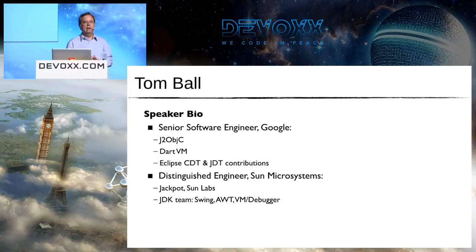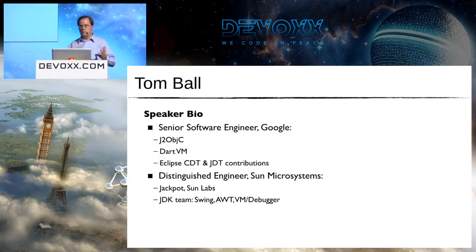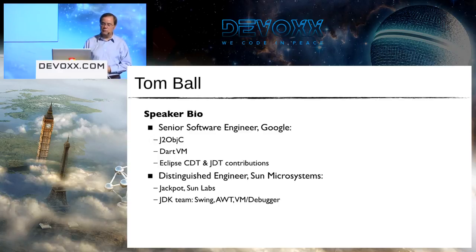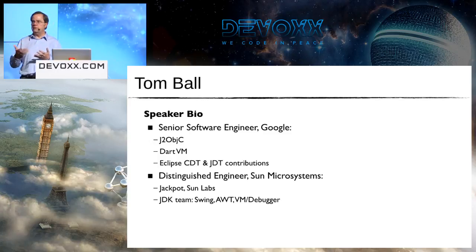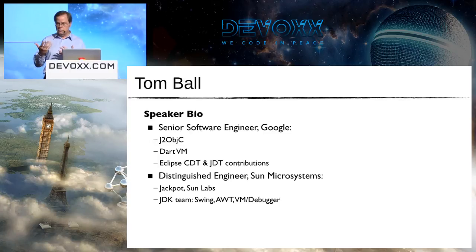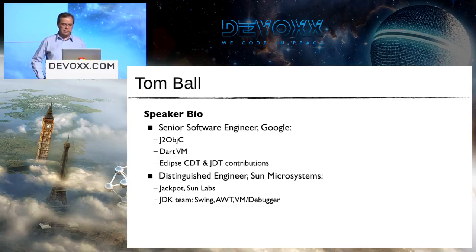In the past at Google, I've made contributions to the Eclipse Java development kit and C development kit, mostly related to fixing bugs and, in the case of CDT, implementing new refactorings for them. Prior to that, I was a distinguished engineer at Sun - or as the real engineers like to call them, extinguished engineers. I worked on Jackpot at Sun, which is part of NetBeans now, a refactoring engine used for all its transformations. And prior to that, I worked on the JDK team - Swing, AWT, and way back when I implemented the debugger API.